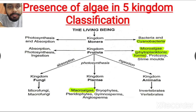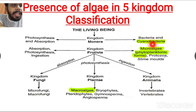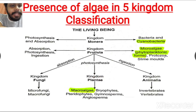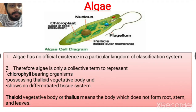Algae are present in different kingdoms. In Monera, the cyanobacteria — that is, the blue-green algae — are present. In Protista, the micro-algae, which are phytoplanktonic forms, are placed. In Plantae, all the macro-algae are placed. So algae do not belong to any one particular kingdom.